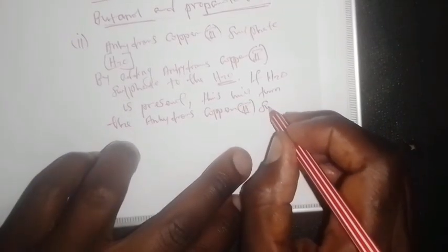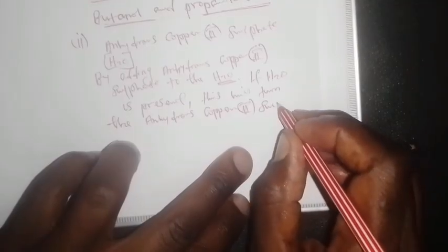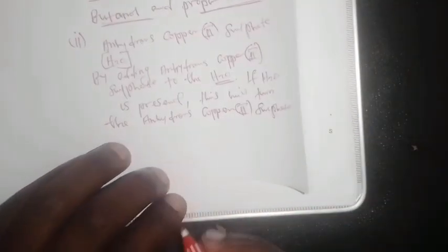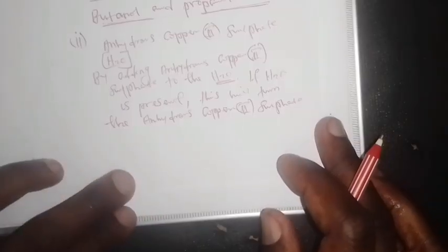The anhydrous copper sulfate will turn blue. So this will change to blue. Anhydrous copper sulfate is a white substance, and if water is present it will change from white to blue. That is the chemical test for water as the minor byproduct of esterification.